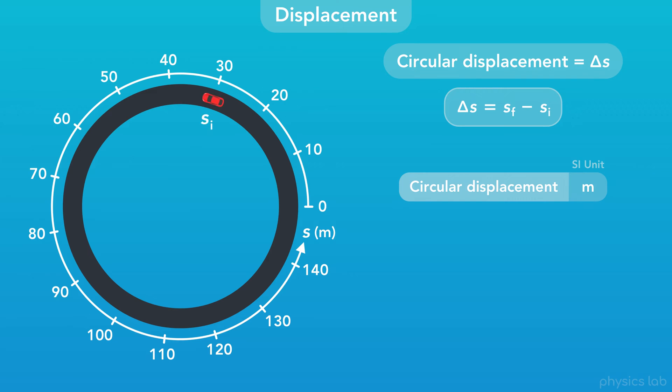As an example, if this car started at an initial position of 30 meters and moved to a final position of 90 meters, then the car's displacement would be 90 minus 30, or 60 meters.